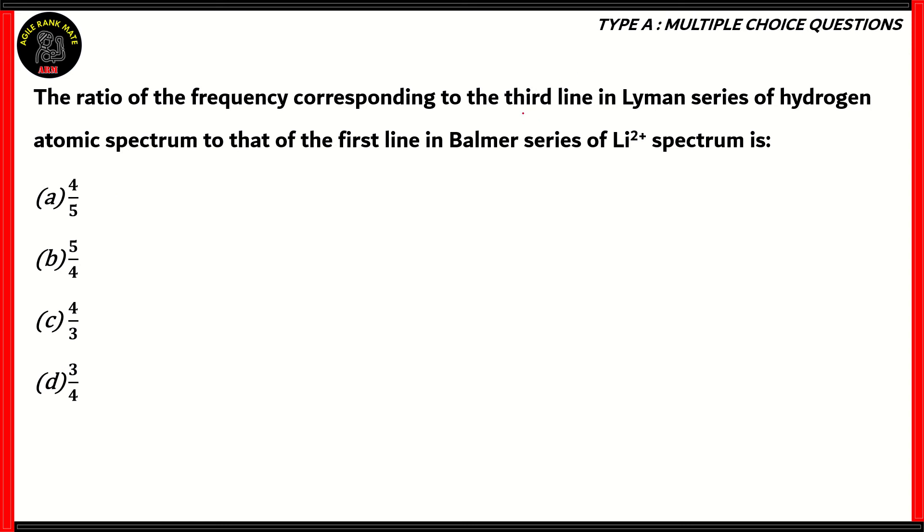Well, first of all, we're dealing with two frequencies here, and we have to find their ratio. Frequency number one is that of the third line in the Lyman series of hydrogen atomic spectrum. For the Lyman series, N1 would be equal to 1, and the third line would correspond to 1 plus 3. So the value of N2 will be equal to 1 plus 3, that's 4. And the atomic number of hydrogen is 1. So now that we know all of these values, how do we calculate frequency?